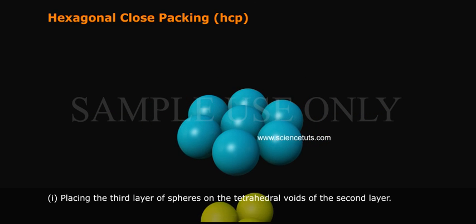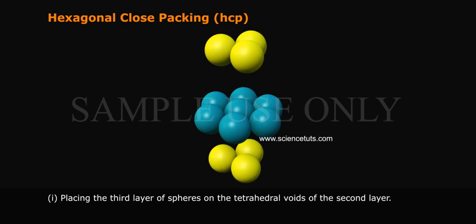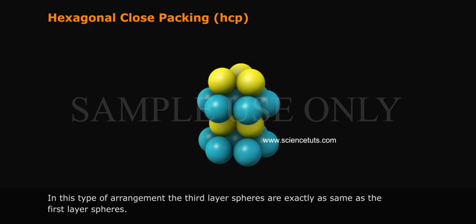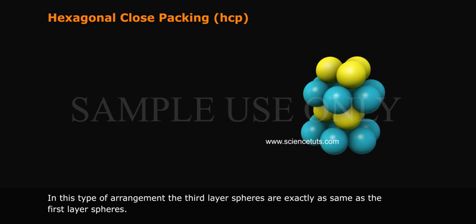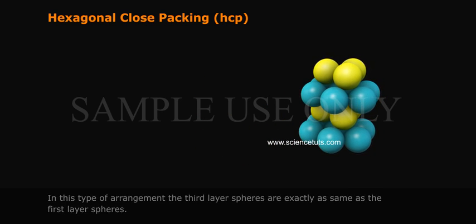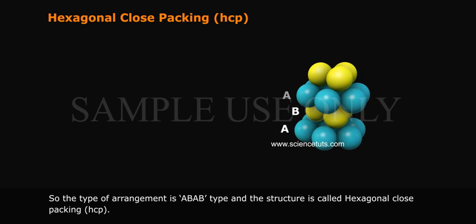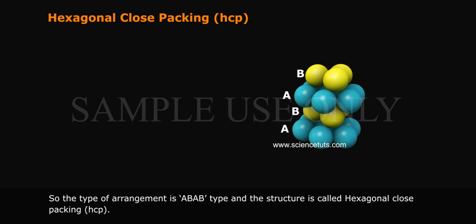First, placing the third layer of spheres on the tetrahedral voids of the second layer. In this type of arrangement, the third layer spheres are exactly the same as the first layer spheres. So the type of arrangement is ABAB type and the structure is called Hexagonal Close Packing HCP.